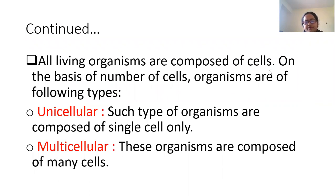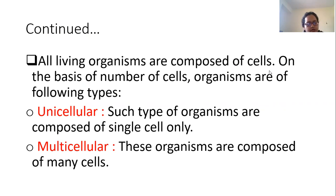On the basis of number of cells, organisms are of two main types. First is unicellular — 'uni' means one, 'cellular' means cell — meaning some organisms are composed of a single cell only. Second is multicellular, meaning the other organisms are composed of many cells; the number of cells is more.